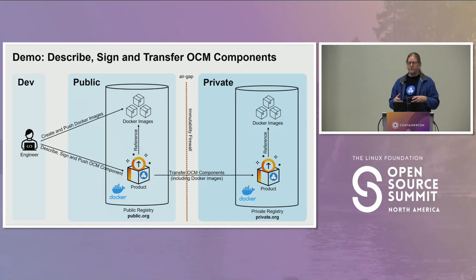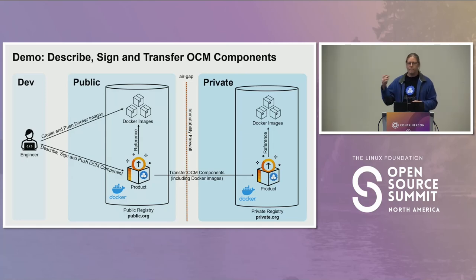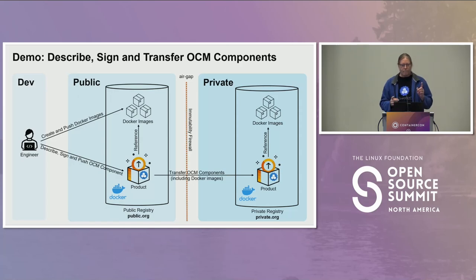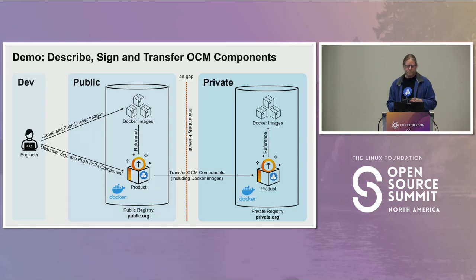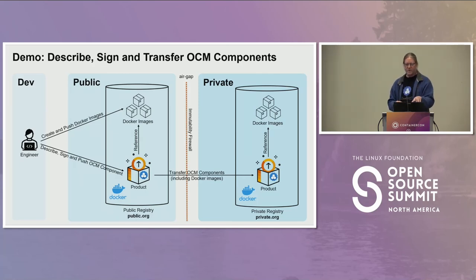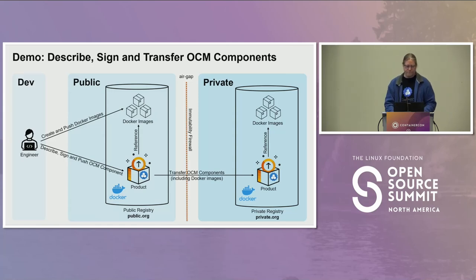For expediency, a few resources are pre-created. In the public org we already have Docker images, one of our two component versions, and some source code. In the private org we have all the boilerplate customized files required to make the deployment happen. The OCM CLI is used to create a component from a descriptor and push it into an OCI repository, with the component representing both the descriptor and references to the Docker image.